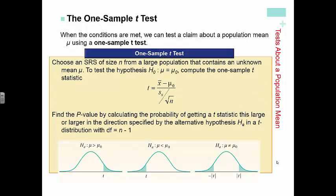Just like before, we need to calculate our test statistic and our p-value. Our test statistic for the one-sample t-test for means is given by this formula: t equals x-bar minus mu-naught over s of x over the square root of n. Remember, x-bar is from your sample, mu-naught is your null hypothesis, s of x is your standard deviation of your sample, and n is your sample size. When you're looking at your t-value on the calculator, you have to remember your degrees of freedom: n minus 1.